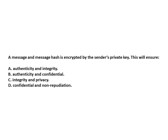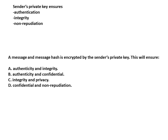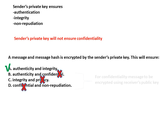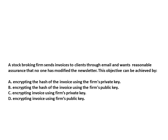If the message and message hash are encrypted by the sender's private key, this will ensure authenticity, integrity, and non-repudiation — but it will not ensure confidentiality. For confidentiality, the message needs to be encrypted using the receiver's public key. In the scenario where a stock broking firm sends invoices to clients through email and wants reasonable assurance that no one has modified the newsletter — the objective is integrity — we need to encrypt the hash using the sender's, i.e. the firm's, private key.